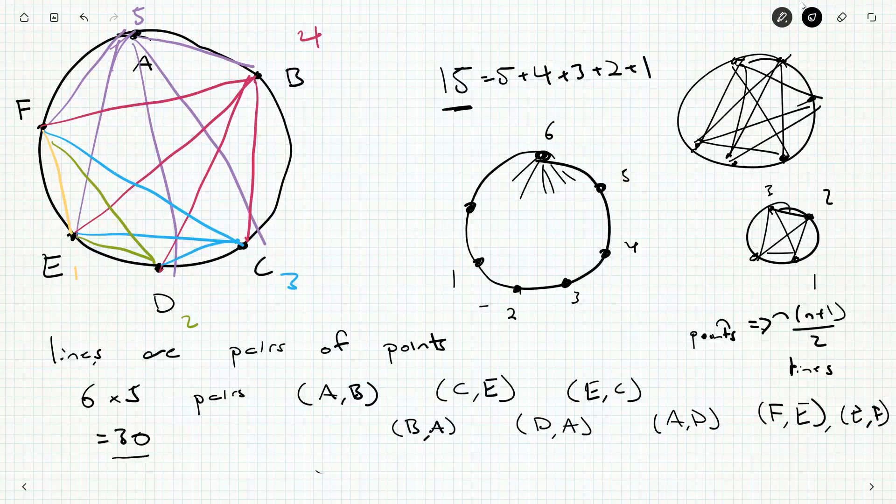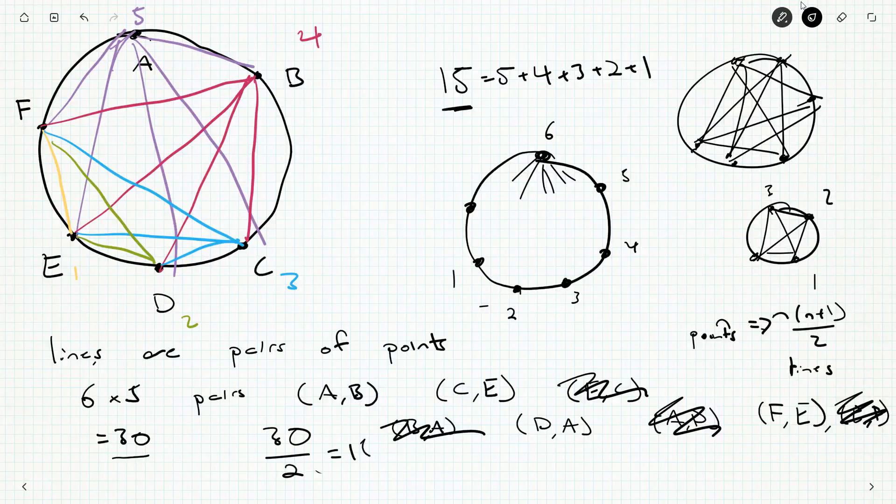Each pair of letters appears sort of twice, but one time in reverse order. But lines don't have orders. So C, E is the line between C and E, but that's the same as the line between E, C. So we need to get rid of all the duplicates. And that means we're going to divide by 2. 30 divided by 2. And so that's going to be 15.